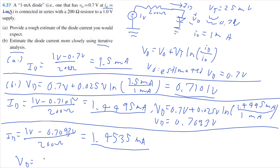Let's recalculate VD. 0.7 volts plus 0.025 volts times the natural log of 1.4535 milliamps divided by 1 milliamp. And here I'm getting actually the exact same number, 0.7093 volts.